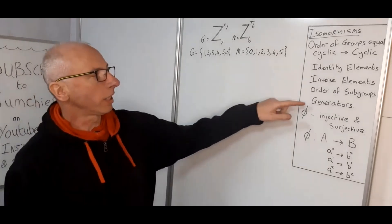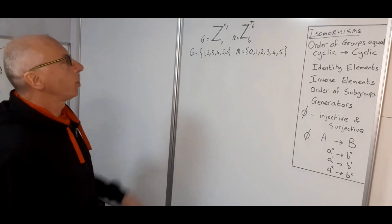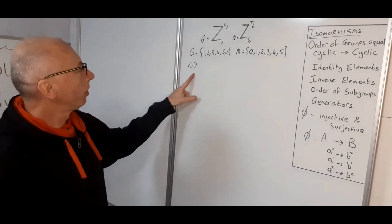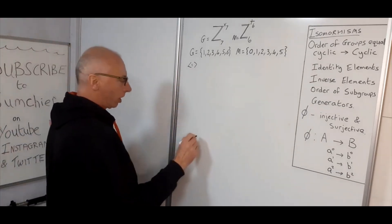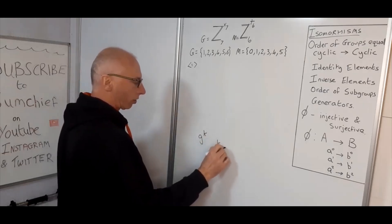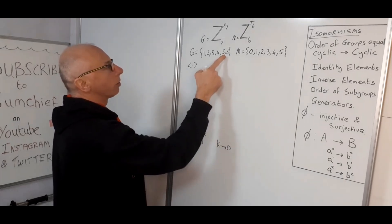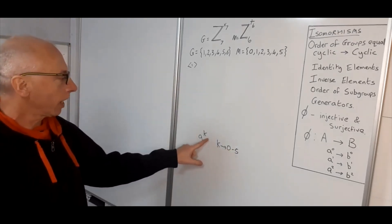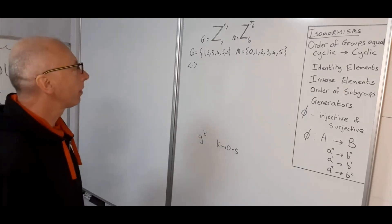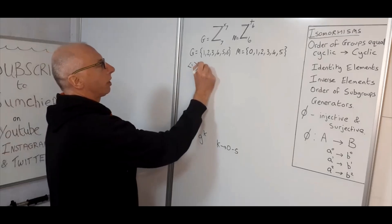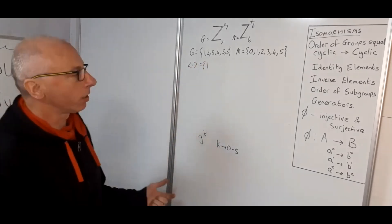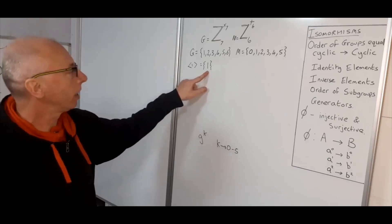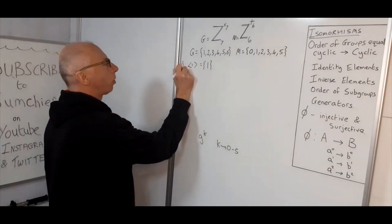Now we're going to find all the generators and the orders of all the subgroups. For G under multiplication mod seven, we use g to the k where k goes from zero to five, giving six elements. Starting with element one: one to the zero is one, one to the one is one, and so on. So element one produces the subset containing only the identity element, which is of order one.